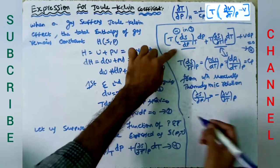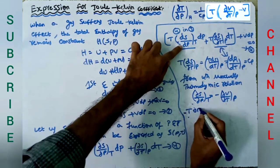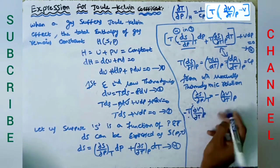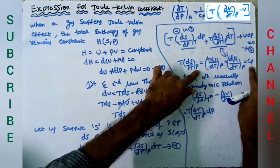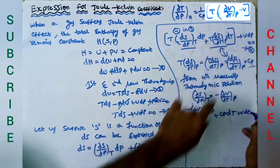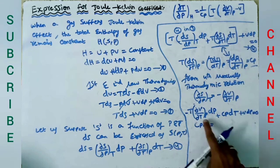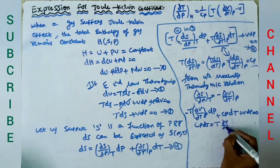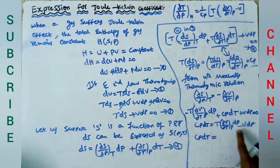Substituting these values in equation 4, we replace (∂S/∂P) with minus (∂V/∂T) at constant pressure times dP, and T times (∂S/∂T) at constant pressure with Cp. This gives minus T times (∂V/∂T) at constant P times dP plus Cp dT plus VdP equals zero.